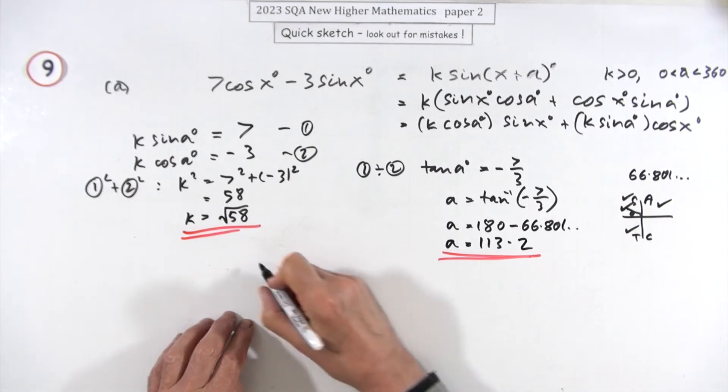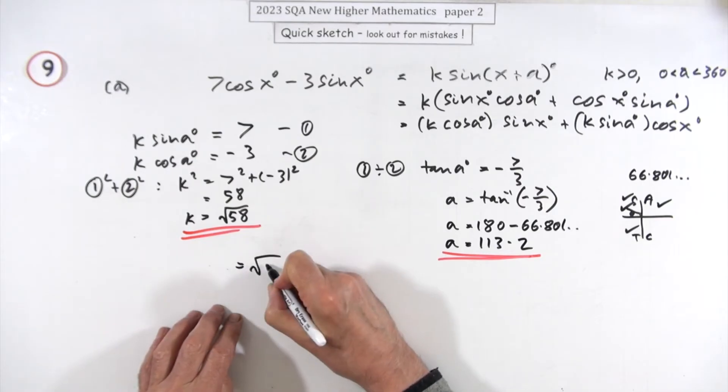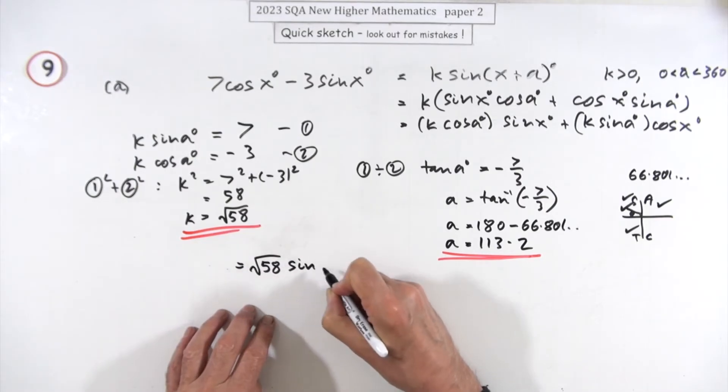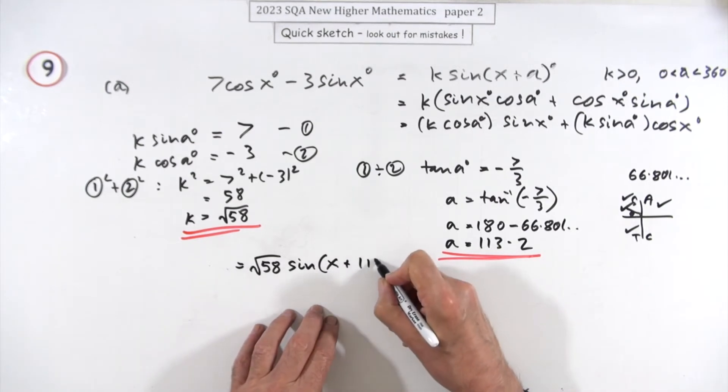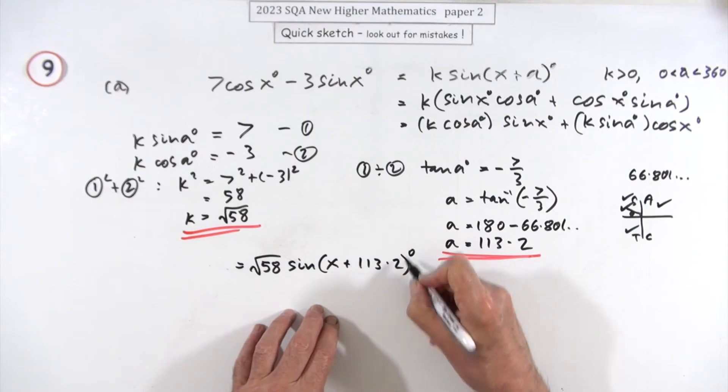Well, we've put it all together now. So that then comes to root 58 sin(x + 113.2°).